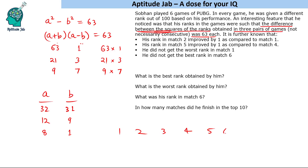For games 1 through 6: it is given that rank in match 2 improved by 1 compared to match 1 — improvement of 1 could be from 8 to 9, or from 31 to 32. Similarly, rank in match 5 improved by 1 compared to match 4. This means one of the pairs (matches 1-2) and (matches 4-5) contains ranks 31, 32 and the other contains 8 and 9. It is also said he did not get the best rank in match 6, and the best rank is 1.